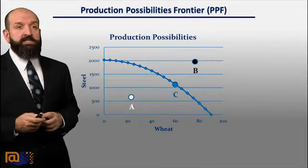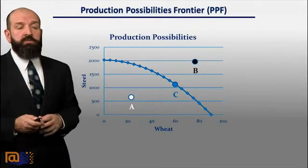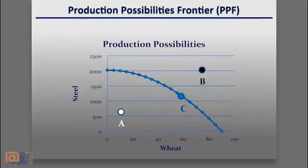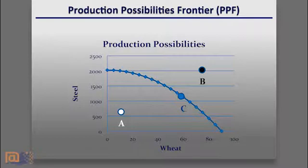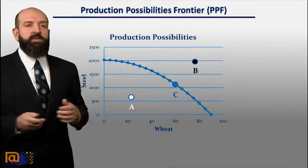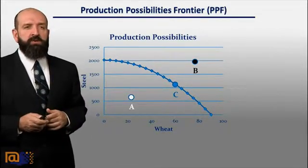In the simplest example, we have just two goods being produced in the country — in this case, wheat and steel. At point A, which is inside the production possibilities frontier, the allocation is not efficient, because you can increase the production of steel, or wheat, or both, and still not run into the constraint of not having enough resources.